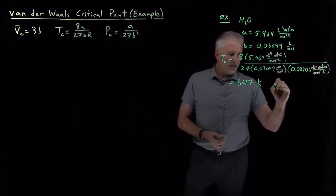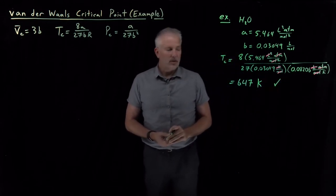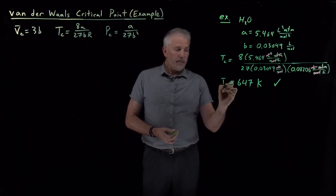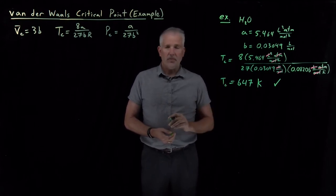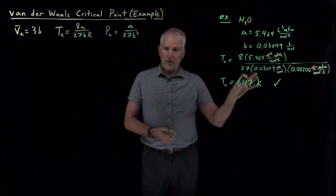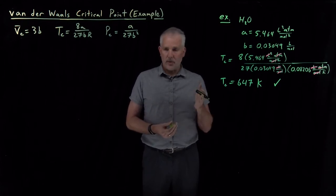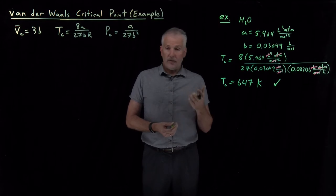In fact, that's very close to what the actual critical temperature is for water. What that means physically - remember what the critical temperature means - that's the temperature above which we can no longer see phase transitions between the liquid and the gas. At room temperature water can evaporate and become a gas. At 100 degrees Celsius we can boil water and turn it into a gas. At elevated pressures we can boil water at higher temperatures.